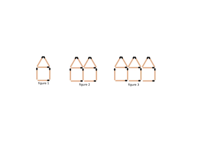So in figure 1 we've got 1, 2, 3, 4, 5, 6 matches. And then we could go to figure 2 and we could count. We've got 1, 2, 3, 4, 5, 6, 7, 8, 9, 10, 11 matches. And then we could do the same count for figure 3 and go on like that.